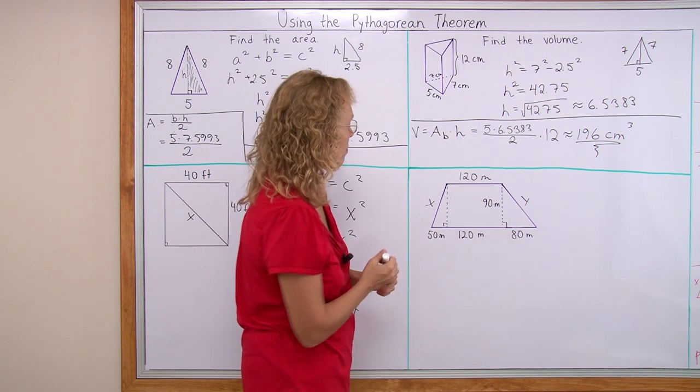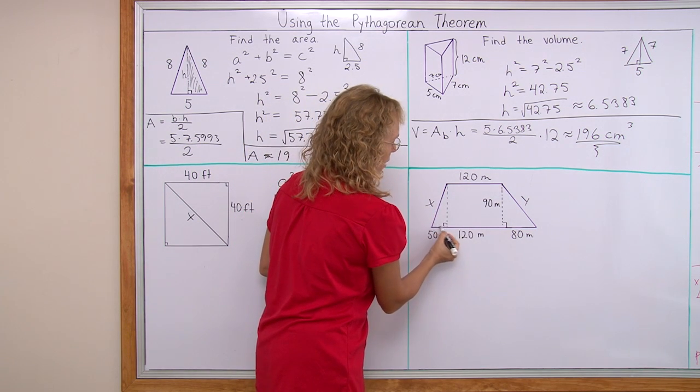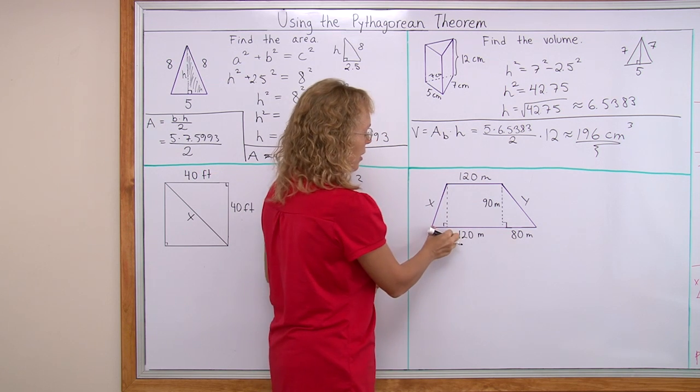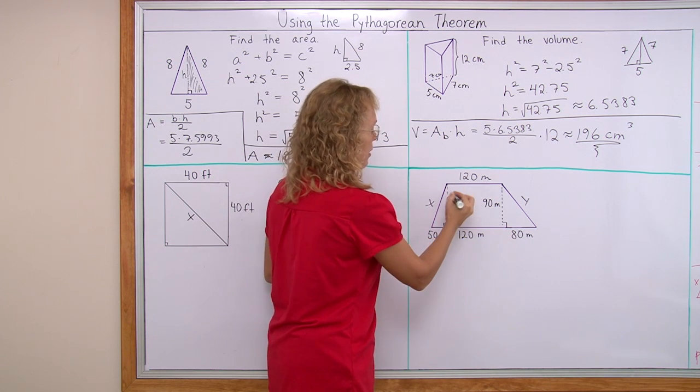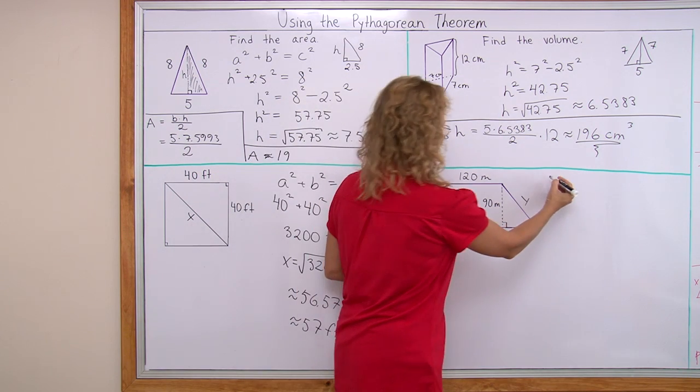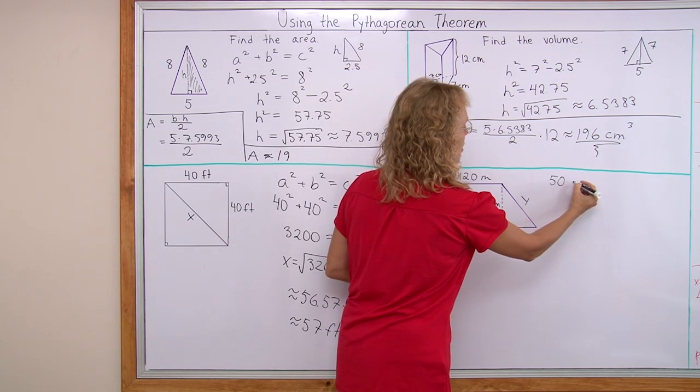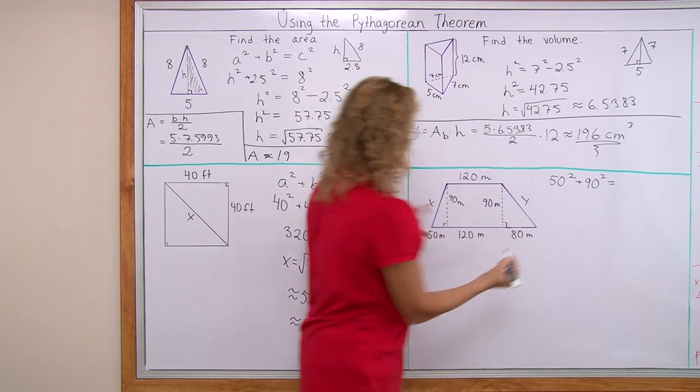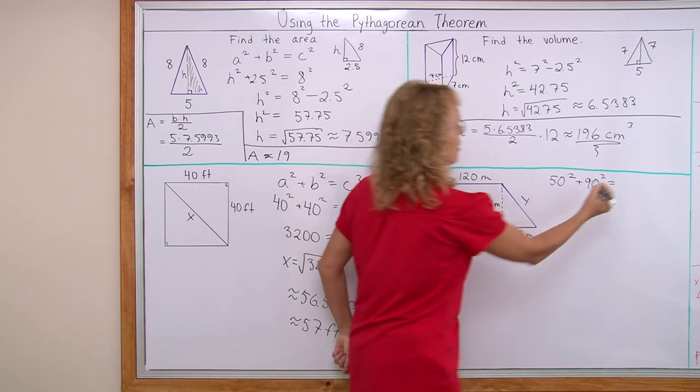x is the hypotenuse, and I have the legs of this triangle, the two sides that are at the right angle, 50m and 90m. So, in the Pythagorean theorem, I have 50m squared plus 90m squared equals my hypotenuse squared, x squared.